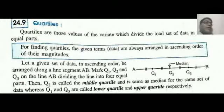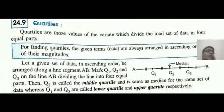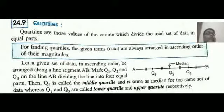Quartile. Quartiles are those values of the variate which divide the total set of data into four equal parts. For finding quartiles, the given items or data are always arranged in ascending order of their magnitude. So you can see in the line drawn, suppose A, B, the data, the range you have taken, middle Q2 is your median. And if you look at this carefully, this seems to be 25%, 50% is your median, so 25% or one-fourth of this is your lower quartile.